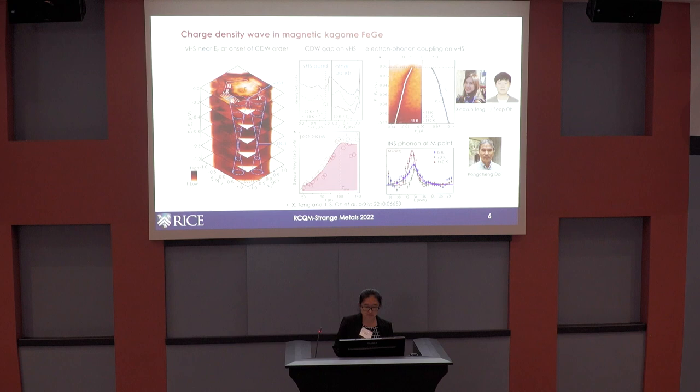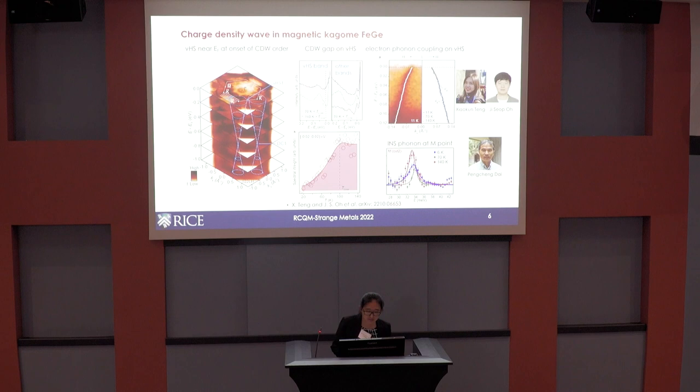We also observe evidence for electron-phonon coupling. This is the ARPES band dispersion, and you can see a dispersion kink identifying an energy scale of about 30 meV. Comparing with inelastic neutron scattering, we can identify this bosonic mode at around 30 meV as coming from an optical phonon, which is modified across the CDW transition temperature. Interestingly, we only observe this electron-phonon coupling on the Van Hove singularity bands at the M point, and this phonon mode modification also occurs at the M point in neutron scattering.